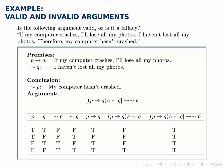We break this argument down into premises and conclusion and write both in symbolic form. The premises are everything before 'therefore,' which consists of the first two sentences: if my computer crashes, I'll lose all my photos. We call the first piece P and 'I'll lose all my photos' Q. So the first premise is P implies Q. The second premise is 'I haven't lost all my photos,' which is not Q. And the conclusion is 'my computer hasn't crashed,' or not P.